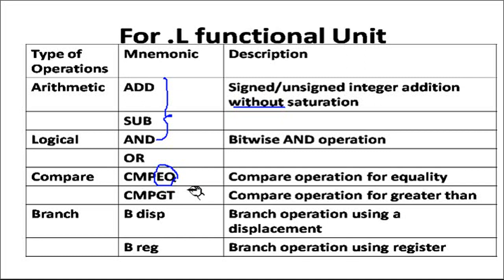Branch displacement. So B DISP, this indicates the displacement branch operation using a displacement. Then B REG, branch operation using register. So if we need to branch control of the program from one particular memory location to another memory location, this branch command will be helpful. So B DISP, B REG are some of the instructions which can be used in .L unit.